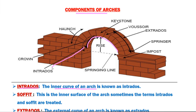The next component part is soffit. Soffit is the inner surface of the arch. Sometimes the terms intrados and soffit are treated as the same, so soffit is also known as intrados.